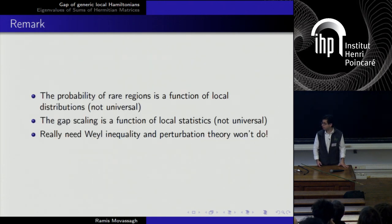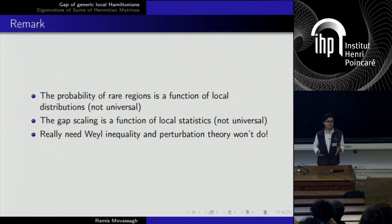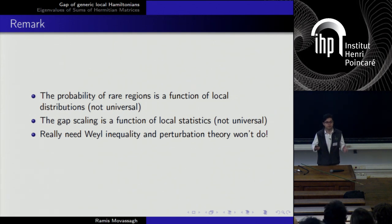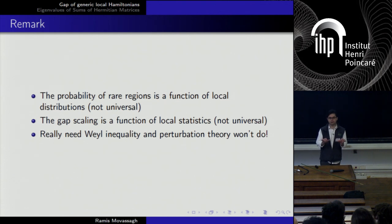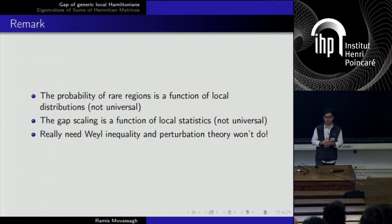Probability of a rare local region is really a function of the local distribution — the gap scaling is not universal. For GUEs you can quantify it, but for projectors I don't know how it scales. Another important remark: the way the proofs go, you can never prove gaplessness using perturbation theory. Even though you have a power series expansion in epsilon, the corrections at higher orders grow combinatorially — you have k-1 sums over eigenvectors with denominators lambda_i minus lambda_j. You would have to prove that none of these constants catch up to kill the epsilon-squared scaling. That's why perturbation theory is not a good way to prove gaplessness. But using the Weyl inequality, you can do it.